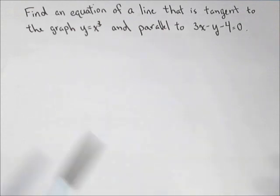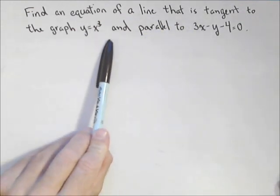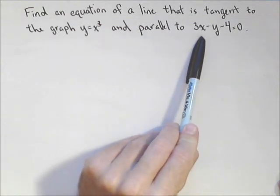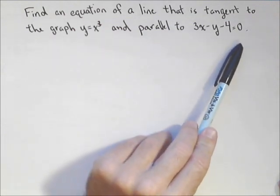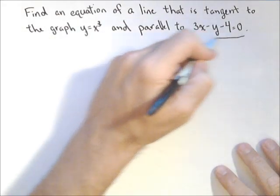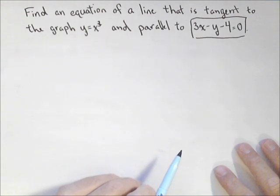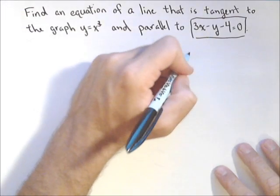So in this problem, we want to find the equation of a tangent line that is tangent to the graph y equals x cubed, and also parallel to 3x minus y minus 4 equals 0. So, if they're to be parallel, then we need the slope of this line, because we need to know what the slope of this line is going to need to be. So let's start off by finding that slope.